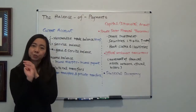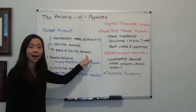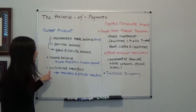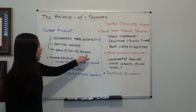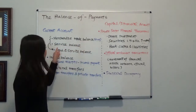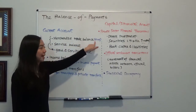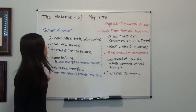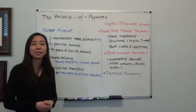The current account has three major components. The first is goods and service balance. We have income balance. And finally, we have unilateral transfers. So what is goods and service balance? It is a sum of merchandise trade balance and service balance. Merchandise trade balance is merchandise export minus merchandise import. Service balance is service export minus service import.